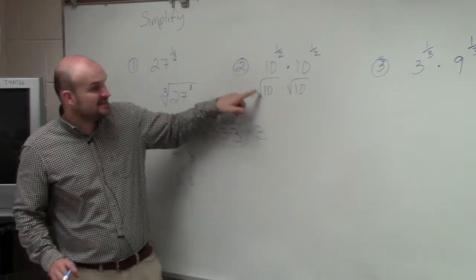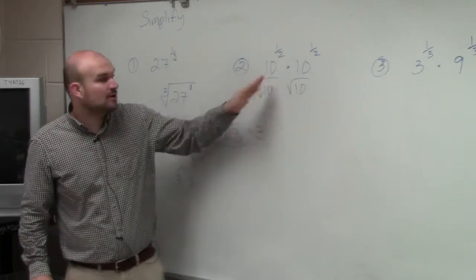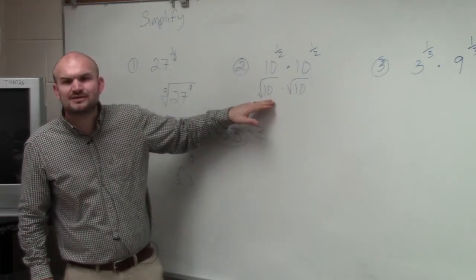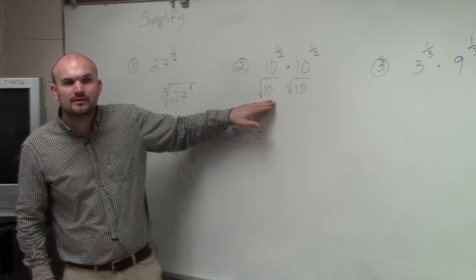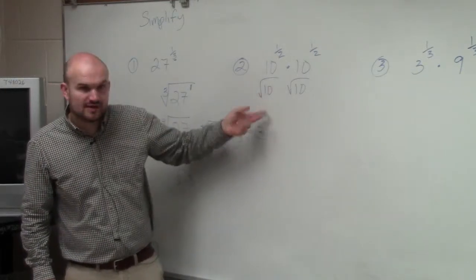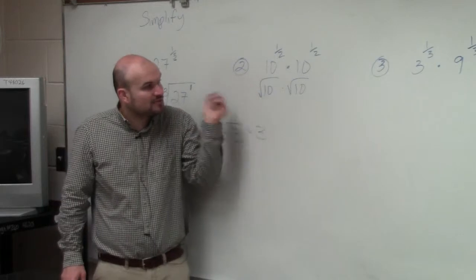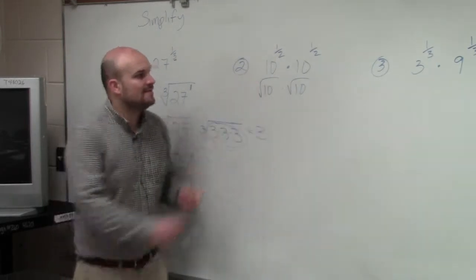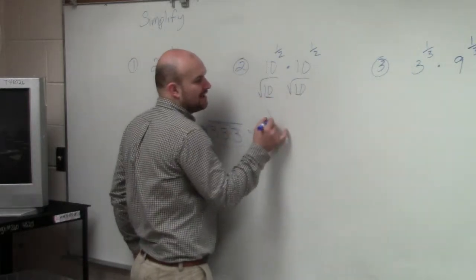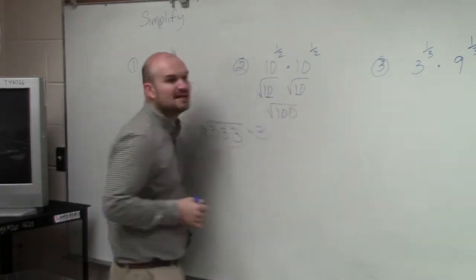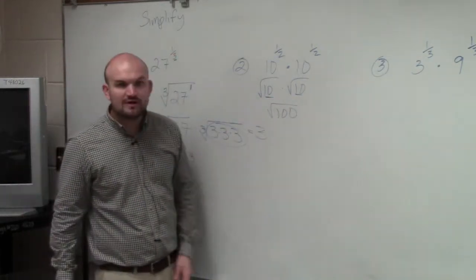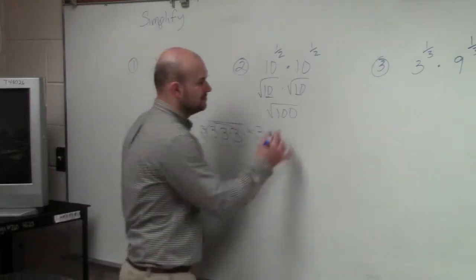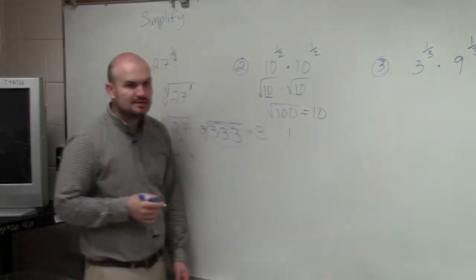If you do the square root of 10 times the square root of 10, these are both square roots, right? So what do we do when we multiply radicands? We talked about this two classes ago. We just multiply the two radicands. When you multiply radicals, as long as the index is the same—square root and square root—then you just multiply your two radicands. So I have the square root of 10 times 10, which is 100. Do we know what the square root of 100 is? 10. So that's your final answer.